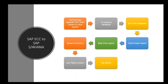SAP S4 HANA is essentially a technology upgrade from SAP ECC. Most of the features and functions of the application are the same, but some features were enhanced to make the application run faster. For example, it now runs on an in-memory database — previously the database ran on a traditional application database server.